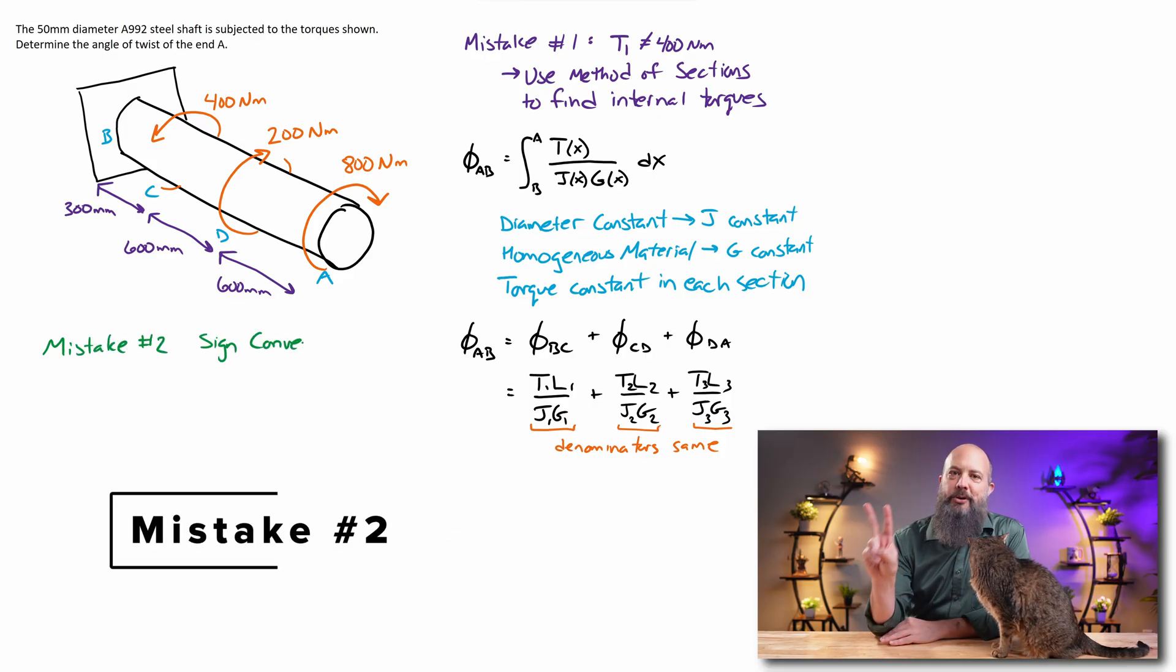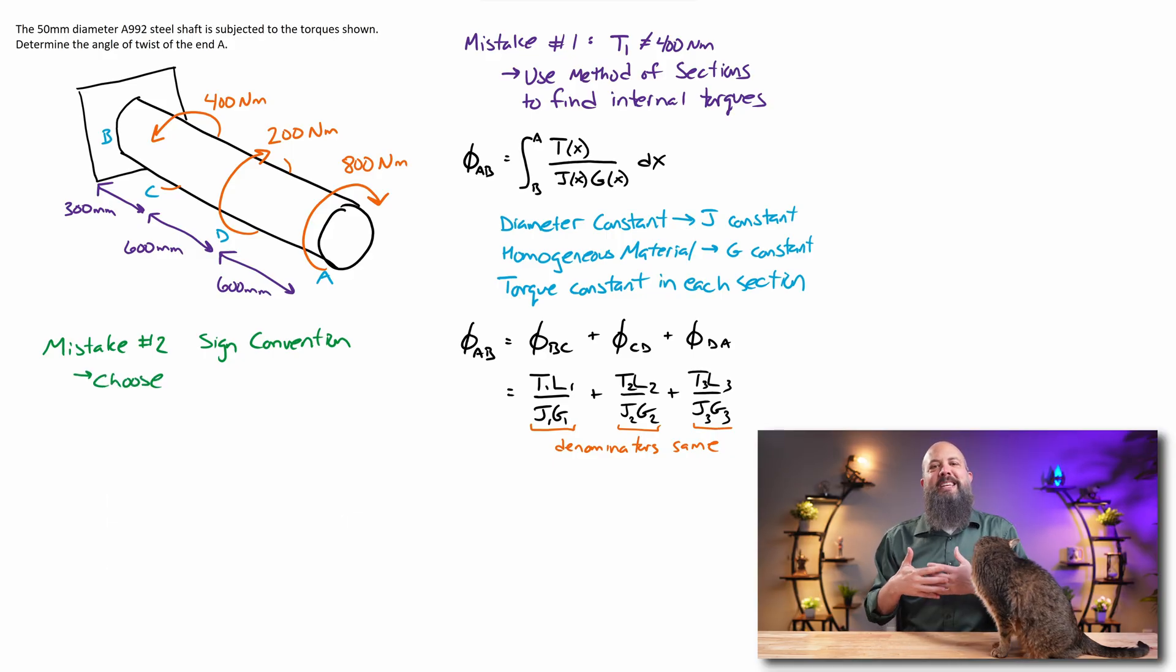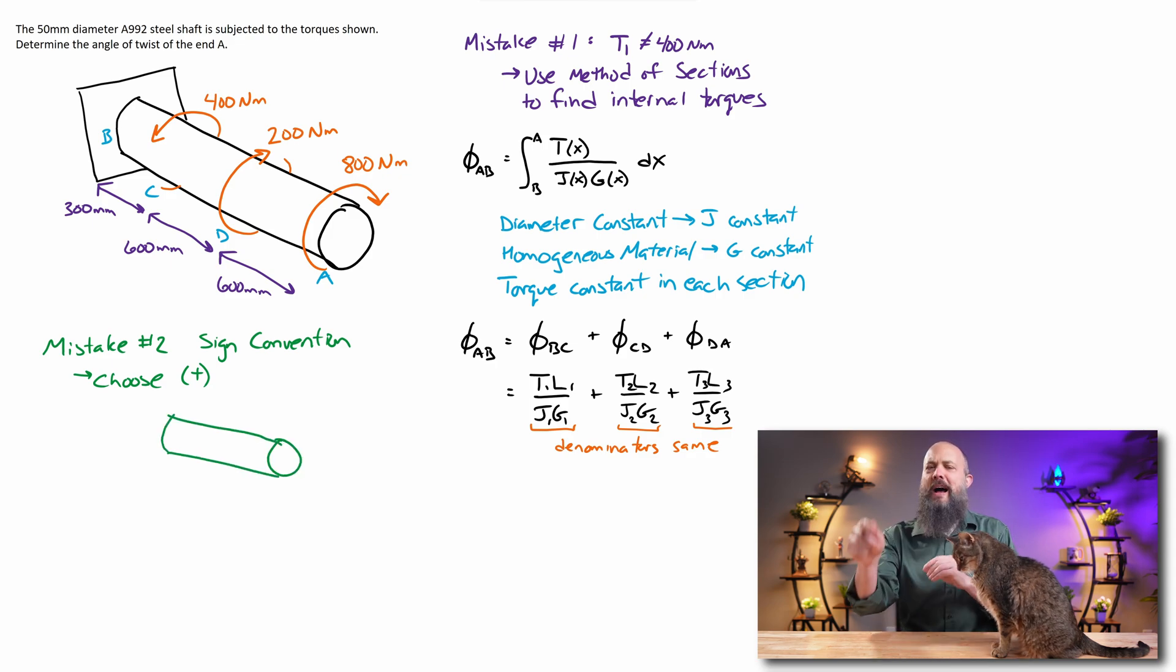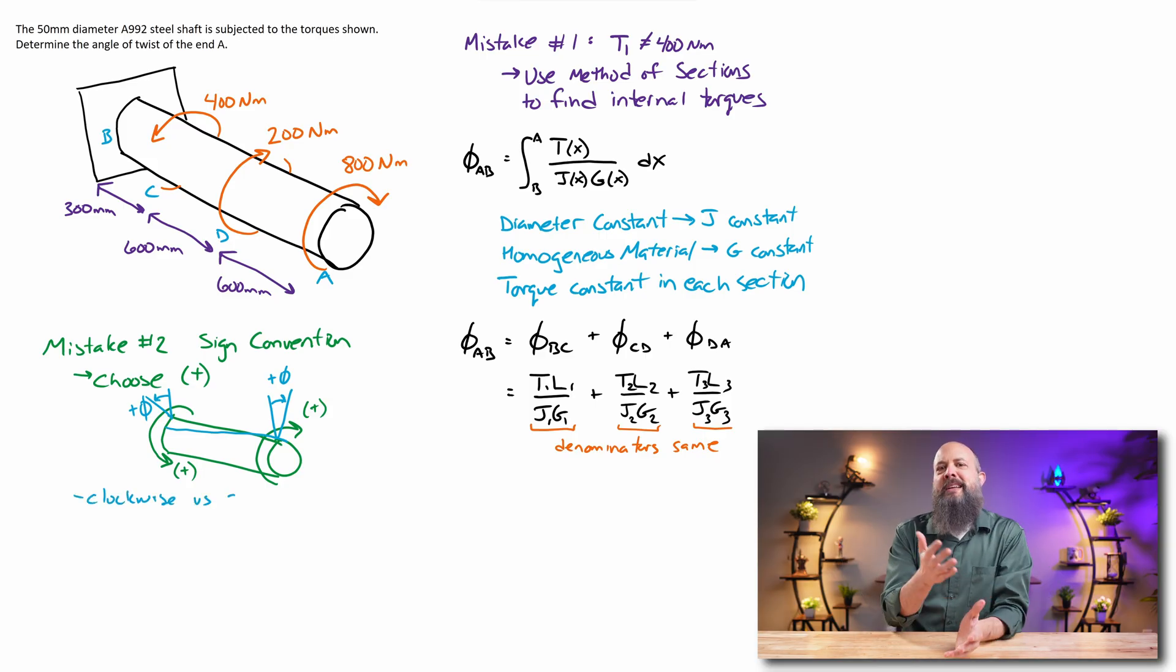But this brings us to mistake number two: the sign convention. And when using angle of twist, you cannot simply say clockwise is positive and counterclockwise is negative, or vice versa, like you would do for moments in a two-dimensional problem. For twisting, when you have an object twisting, if you see my two hands, my hands are rotating in different directions, and yet they both cause the same twist. This means that at the end of the bar.